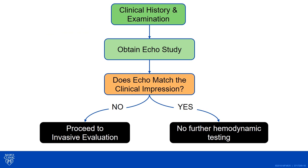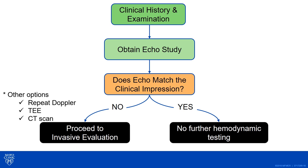How we approach patients: you always want to take a history, do a physical examination, assess where you think the patient is, and get the echocardiogram as the first clue. If your clinical impression and your echocardiographic impression match, you do not need further hemodynamic testing — you know how to manage that patient based on those numbers. But if your clinical impression and your echocardiogram are at odds with one another, you need to do more evaluation.